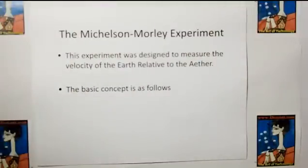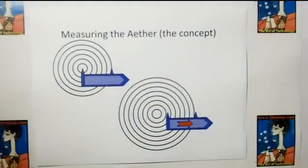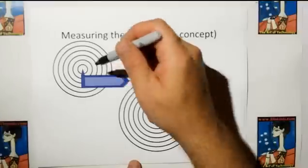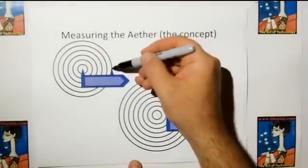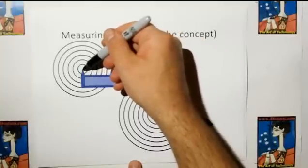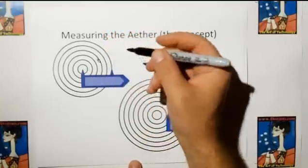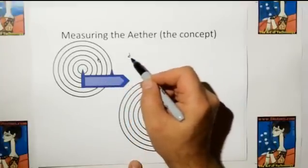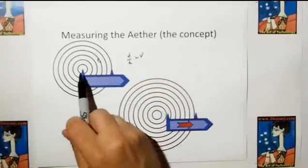They developed the Michelson-Morley experiment. The basic concept is as follows — this is not the same as what they used, but it's the same idea. You can think of measuring the speed of a boat relative to water waves: on the back of the boat, you put a dipper that disturbs the water at a constant rate. At the front, you have a detector. Distance divided by time equals velocity, and you can figure out the velocity of the waves.